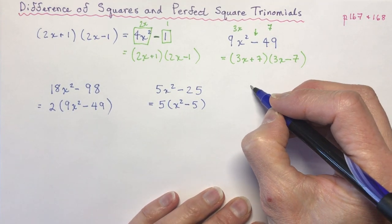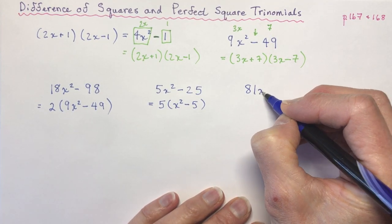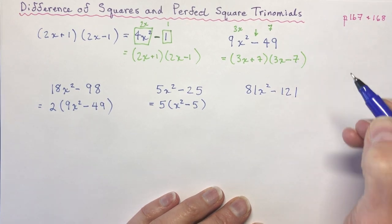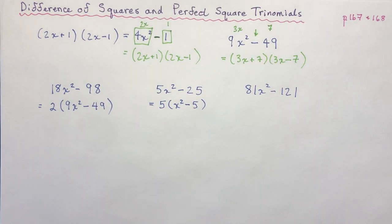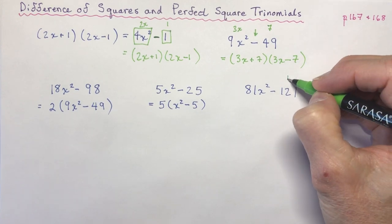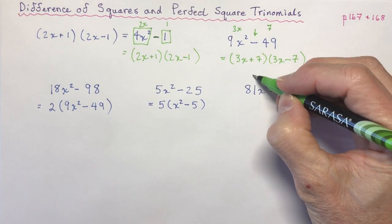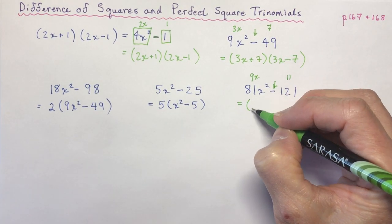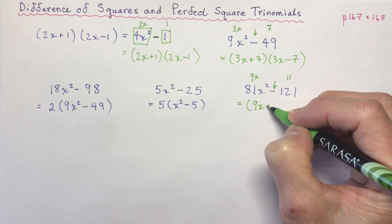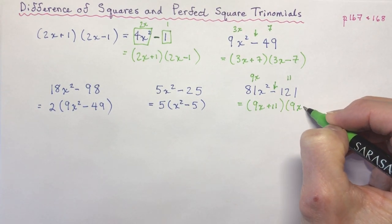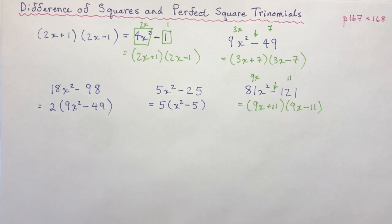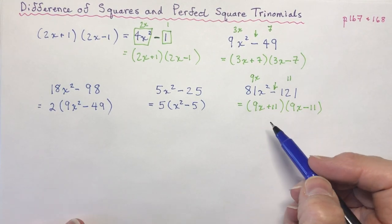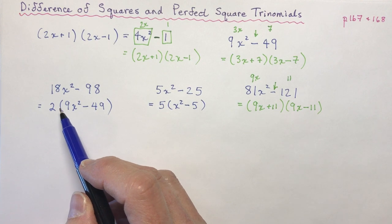Let's try 81x squared minus 121. The square root of 121 is 11, and the square root of 81x squared is 9x, and there is a minus sign, so that's perfect. All I have to do is write 9x plus 11 times 9x minus 11. It's important to first check whether they're perfect squares, then always check for a common factor.